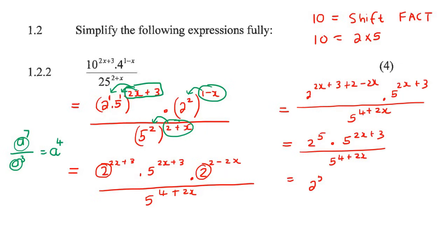So what we're going to have now is we're going to keep that as 2 to the 5. And then we're going to say 5 to the 2x plus 3 minus. Then we're going to say in brackets, 4 plus 2x. You see what I did? I took these top exponents minus the bottom exponents. And so that's going to be 2 to the 5.